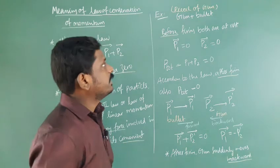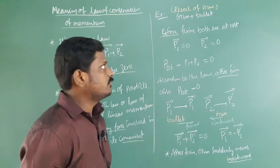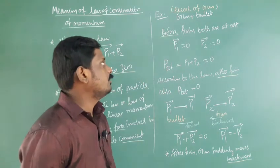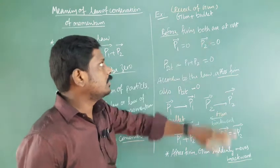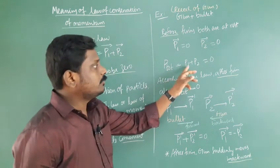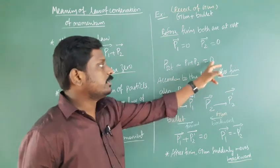For example, recoil of gun. Initially gun and bullet are at rest before firing. Particle 1 and 2 are gun and bullet. Both are at rest. P total equals P1 plus P2. Both are at rest means velocity is zero, so it is zero.